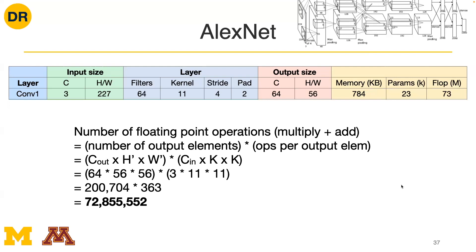Working through the rest of AlexNet: after five convolutional and pooling layers, the final feature volume at max pool 5 has spatial resolution 6×6 and 256 channels, giving 256×6×6 = 9,216 elements. This gets flattened into a vector of size 9,216, which is then processed by a fully connected layer outputting 4,096 features (a chosen hyperparameter), then a second fully connected layer outputting 1,000 scores for the 1,000 ImageNet classes.